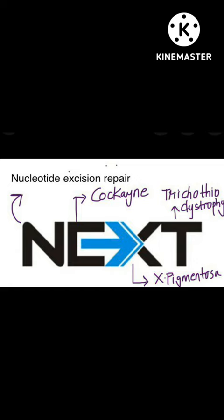The third image is about NER — Nucleotide Excision Repair. The mnemonic is CXT: C for Cockayne syndrome, X for Xeroderma Pigmentosum, and T for Trichothiodystrophy. Remember it as NCXT.